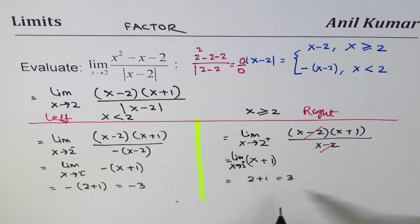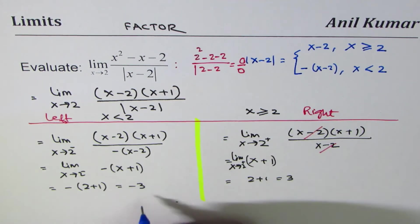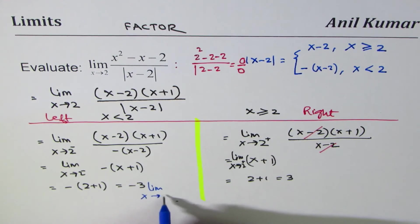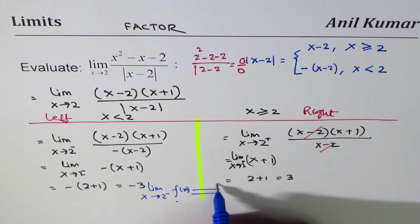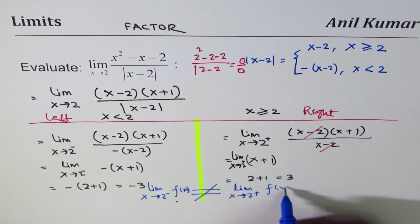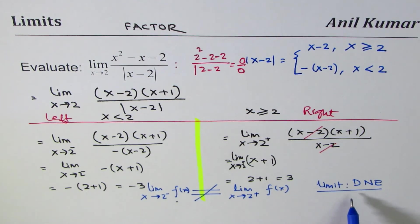You can see that the limit from the left side is not equal to the limit from the right side. The limit when x approaches 2 from the left for the given function is not equal to the limit when x approaches 2 from the right. Therefore, the limit does not exist. So in this question the answer is that the limit does not exist. I'm Anil Kumar and I hope that helps. Thank you and all the best.